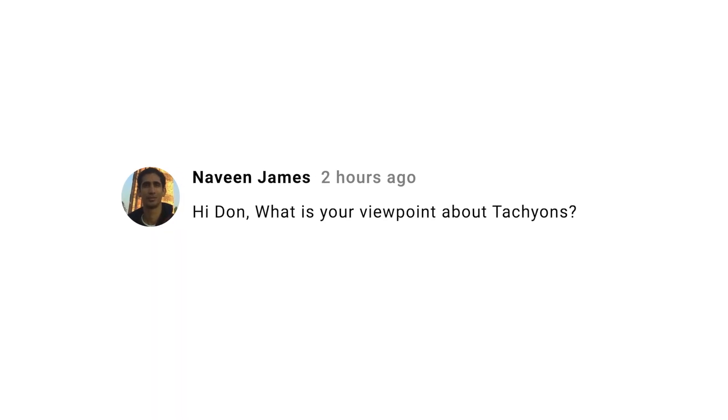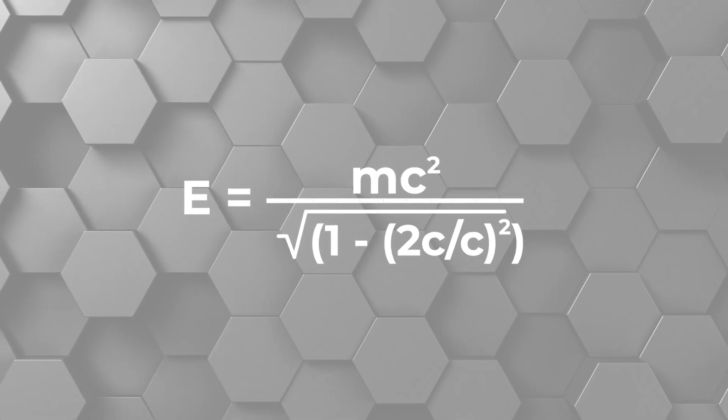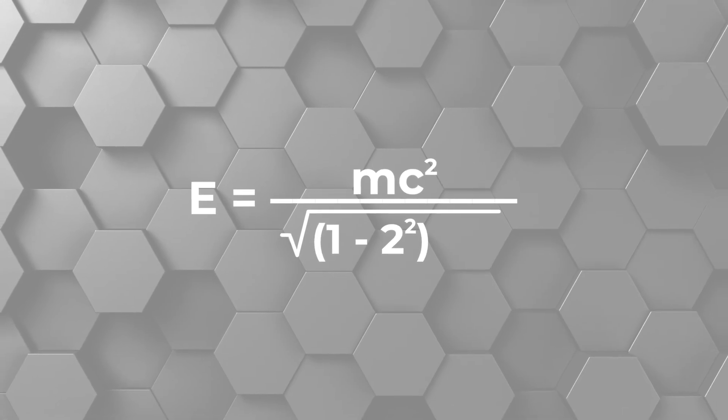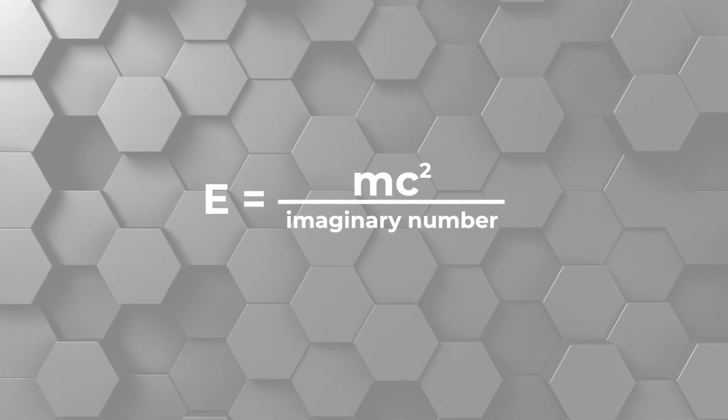Naveen James asks me about my viewpoint on tachyons, which are particles that go faster than light. The answer is simple — I don't really have one, because there is zero evidence that they exist. Of course, it's possible that they actually do exist, and people should continue to think about ways to look for them. But one thing I'm certain about is that there has been a lot of ridiculous things written about them. People talk about tachyons as having imaginary mass, or going back in time, or breaking causality, or all sorts of nonsensical things. All of those ideas arise from applying Einstein's theory of relativity to particles going faster than light, but Einstein's equations are explicitly valid only for objects moving slower than light, so they just don't apply.